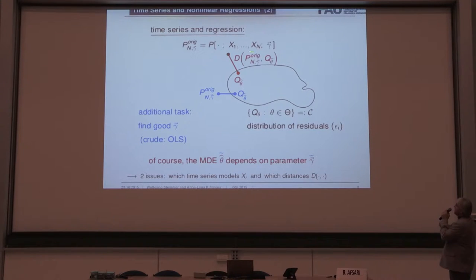So putting that into a picture means, here our data-derived distribution also corresponds on a space parameter, gamma. And say we have found a good gamma, then you can do this optimization problem. Find the best distribution for the corresponding noise. But then, of course, if you have a different gamma, you get a different solution and a different parameter estimator. So here you face an additional task to find a good gamma. For instance, you can do grid search or least squares. So two issues, which time series model can we use and which distances can we use.